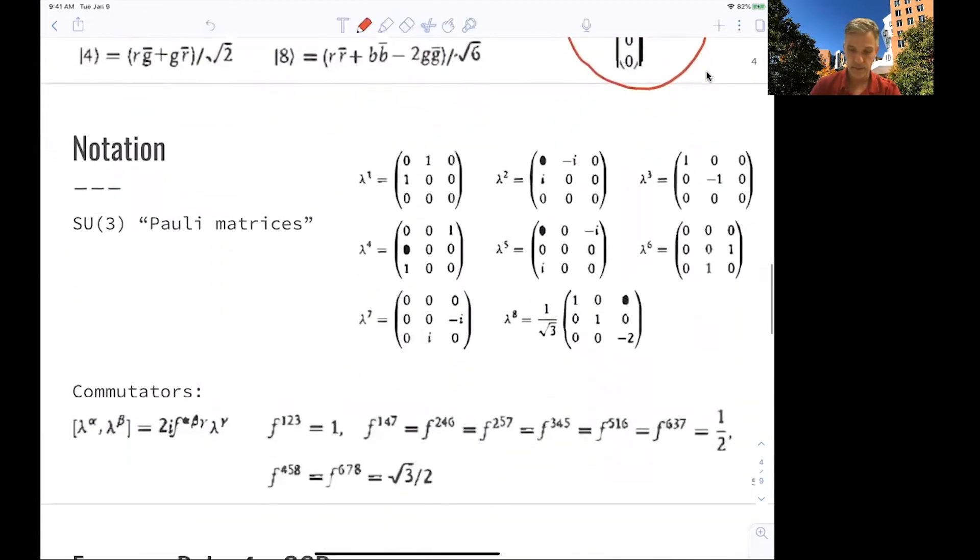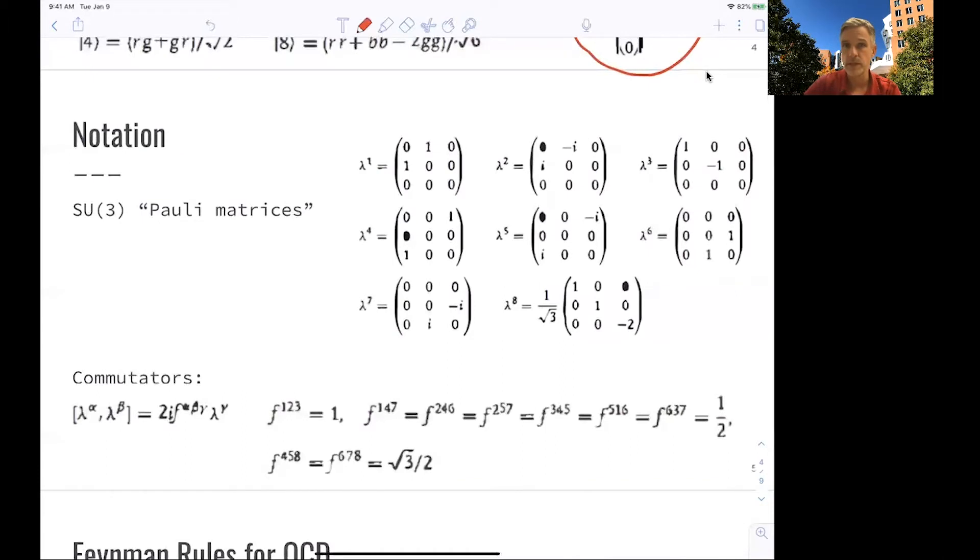So let me introduce the notation here. We were introducing Pauli matrices, but not for SU2 as a symmetry group, for SU3. They're called the Gell-Mann matrices, and they're just written here. Again, those are the rotations I was just talking about. Those are the rotation from one color state into the next.